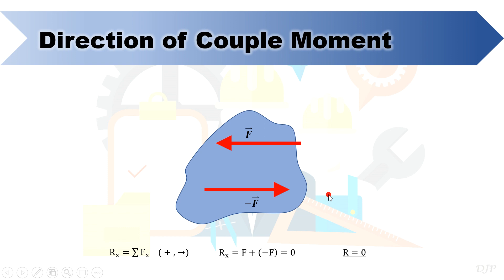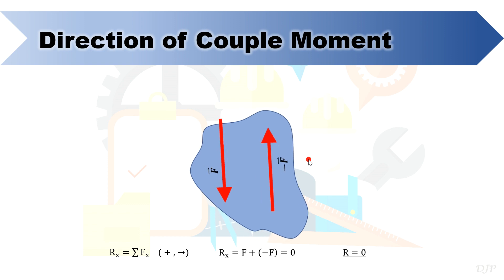However, this body has tendency to rotate due to the given forces. If this force will remain directed to the left and this force will remain directed to the right, the couple can twist or rotate the body in a counter-clockwise rotation.